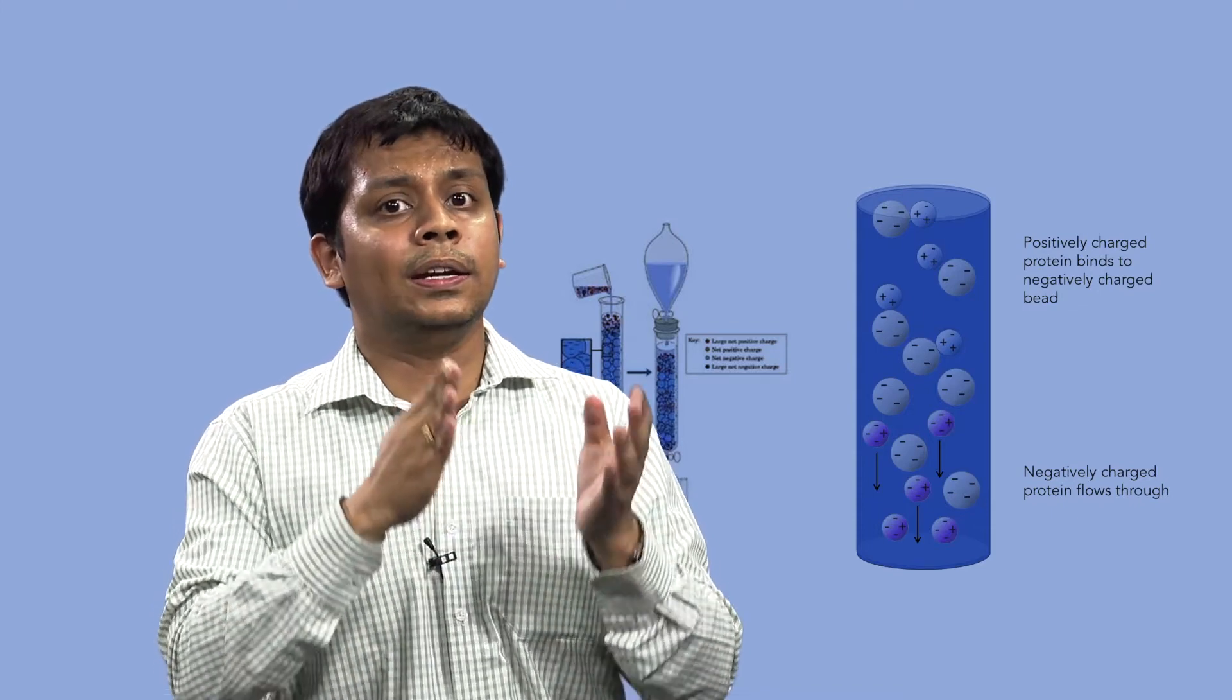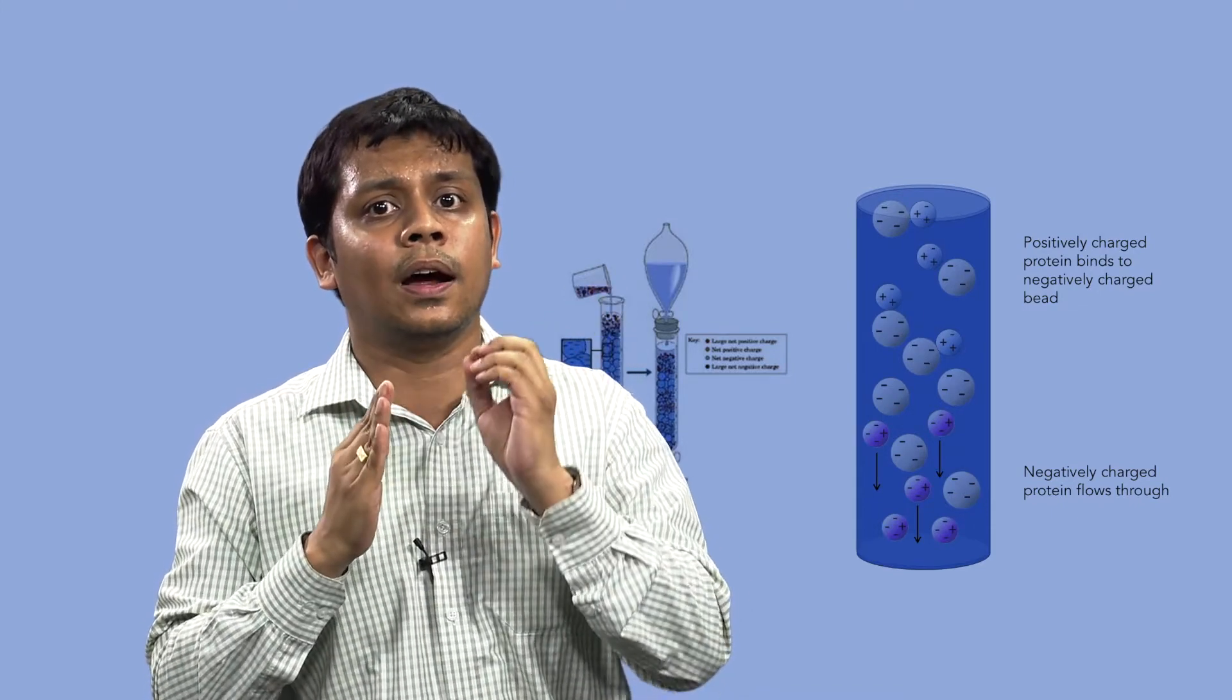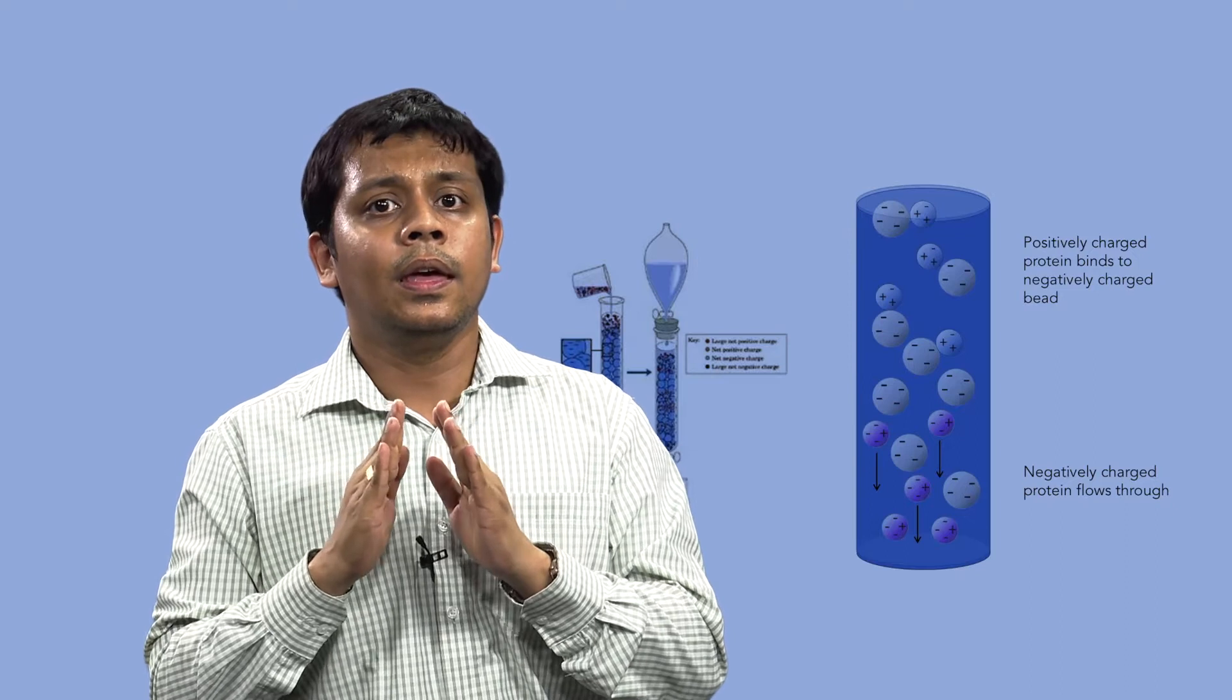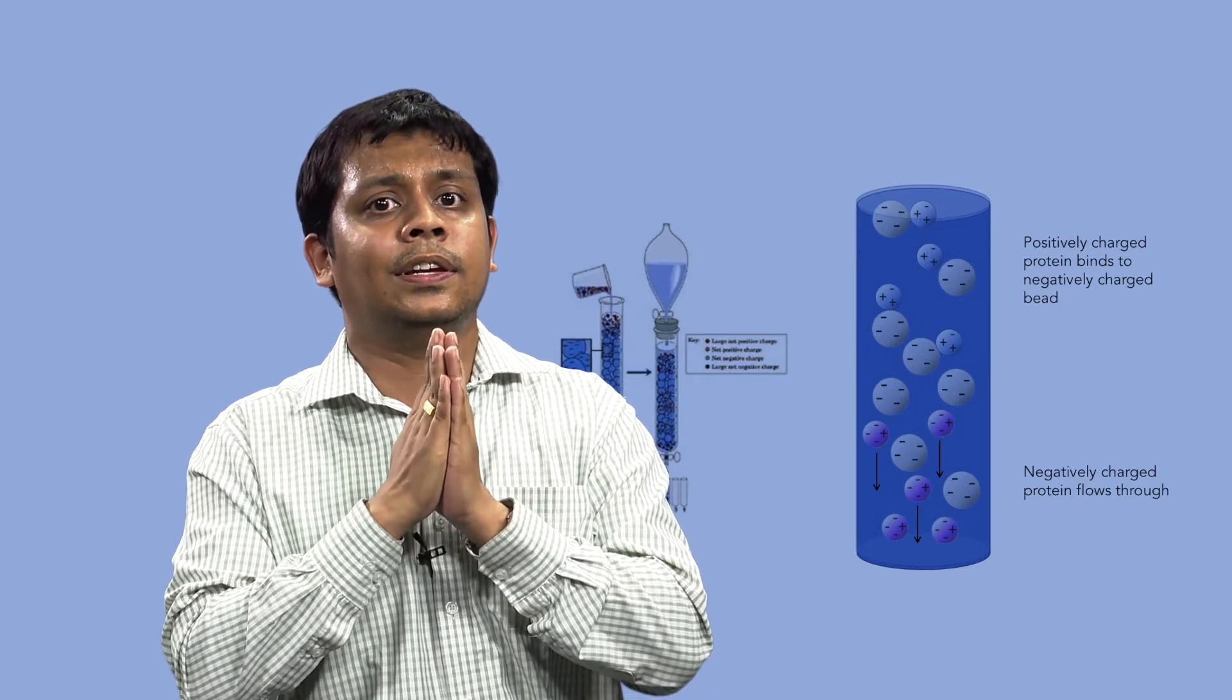The column is then re-equilibrated in start buffer before starting the next run. The above describes a typical ion exchange separation.